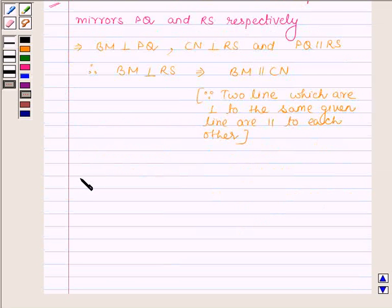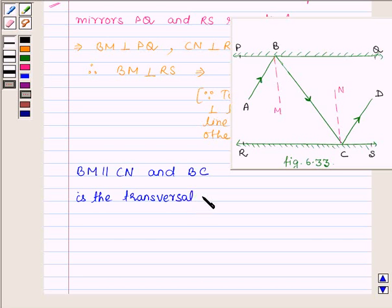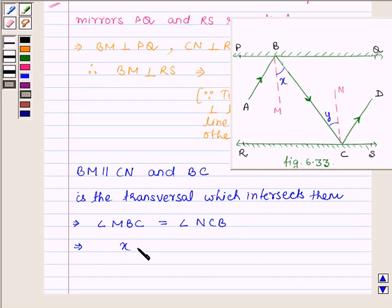And now since BM is parallel to CN and BC is the transversal which intersects them, this implies angle MBC is equal to angle NCB. Let us name the angles as X and Y. So this implies X is equal to Y.